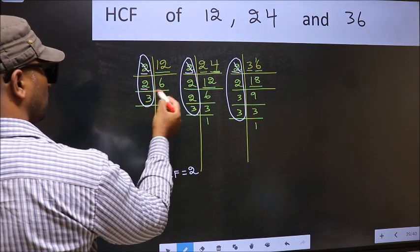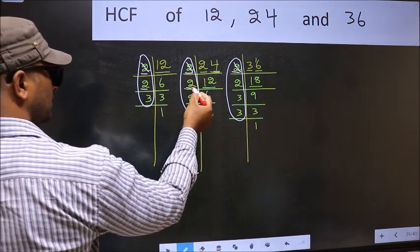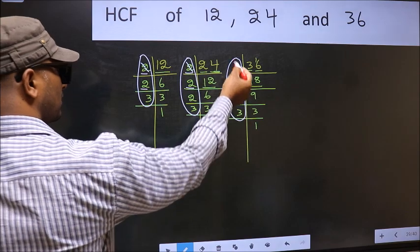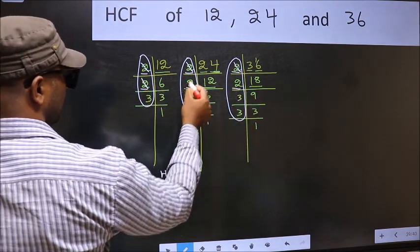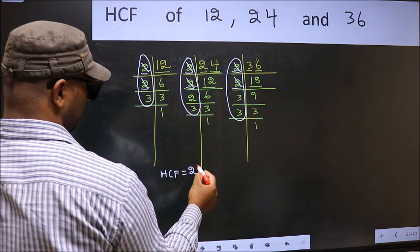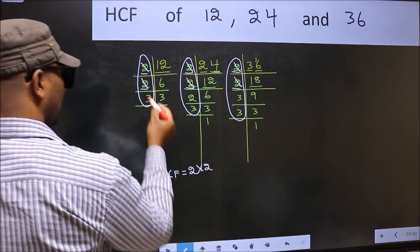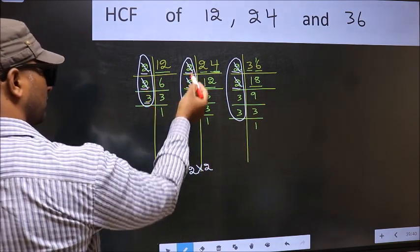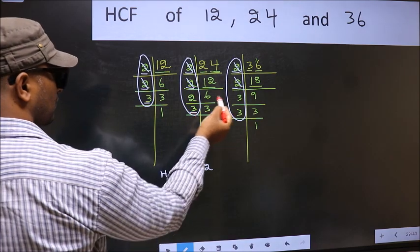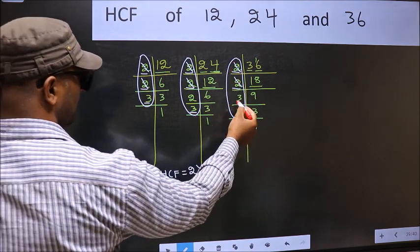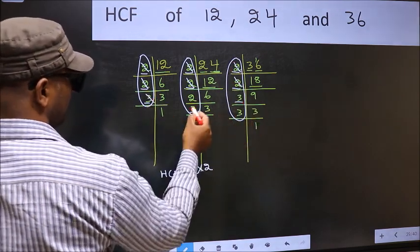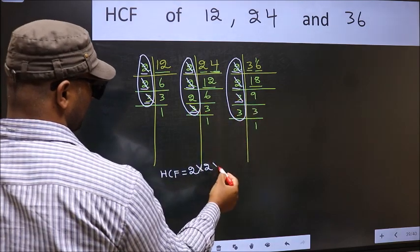Next number 3. Do we have 3 here? Yes. Go to the next place. Do we have 3 here? Yes. So cut 3 right here.